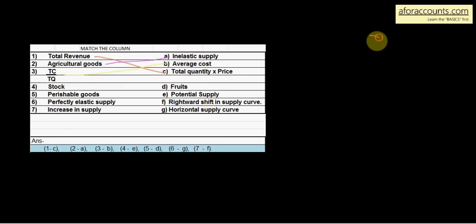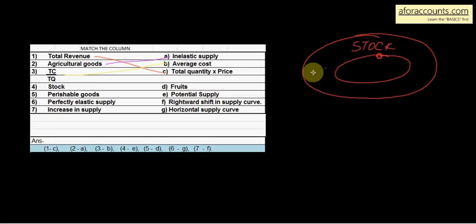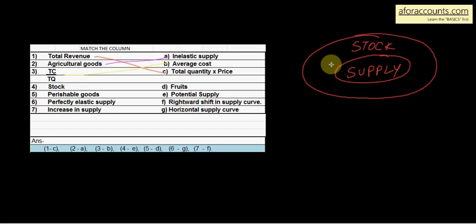Stock क्या होता है? हमने पढ़ा था — यह पूरा जो है वो है आपका stock, और उसमें से एक part supply किया जाता है। Give reasons and explain में एक line याद करो: Stock is potential supply. यहाँ पे potential supply दिख रहा है। So 4th का answer E — stock is potential supply.